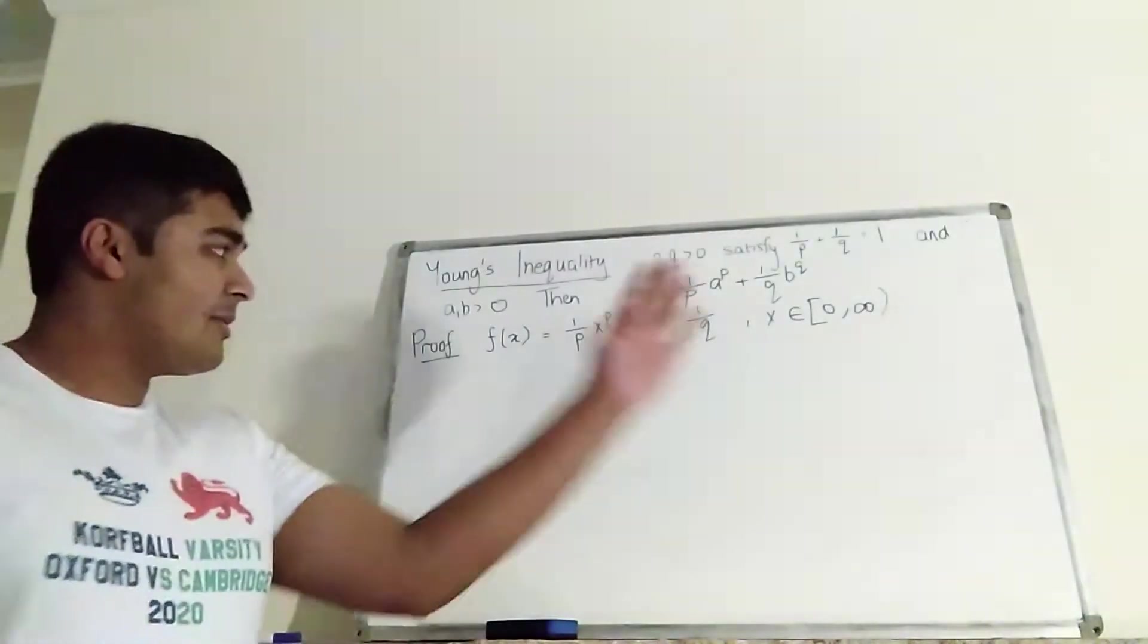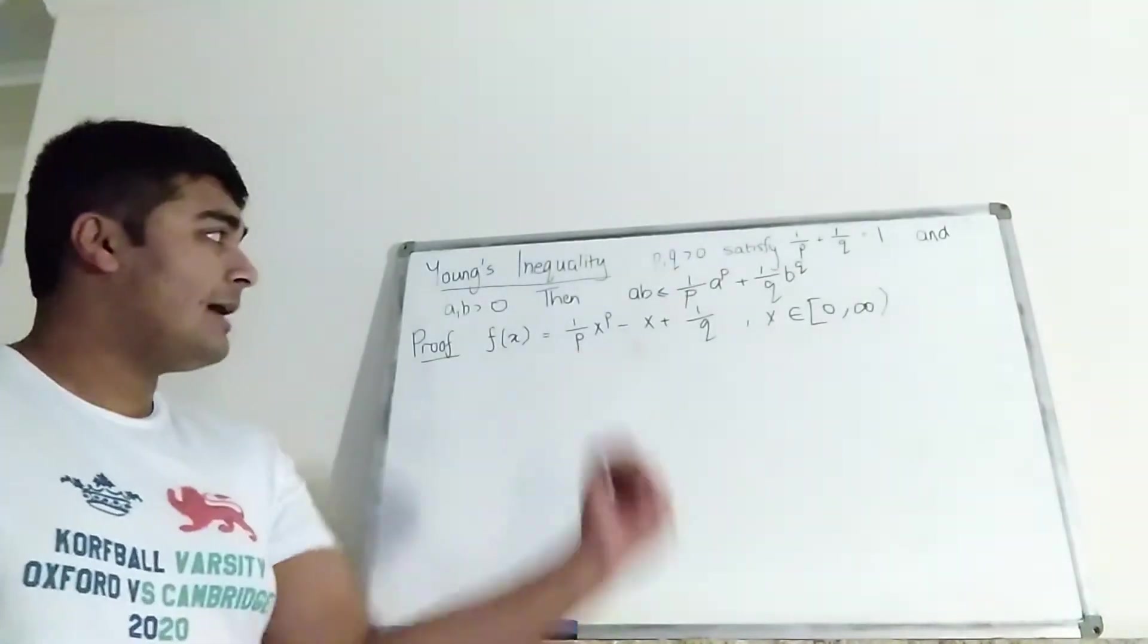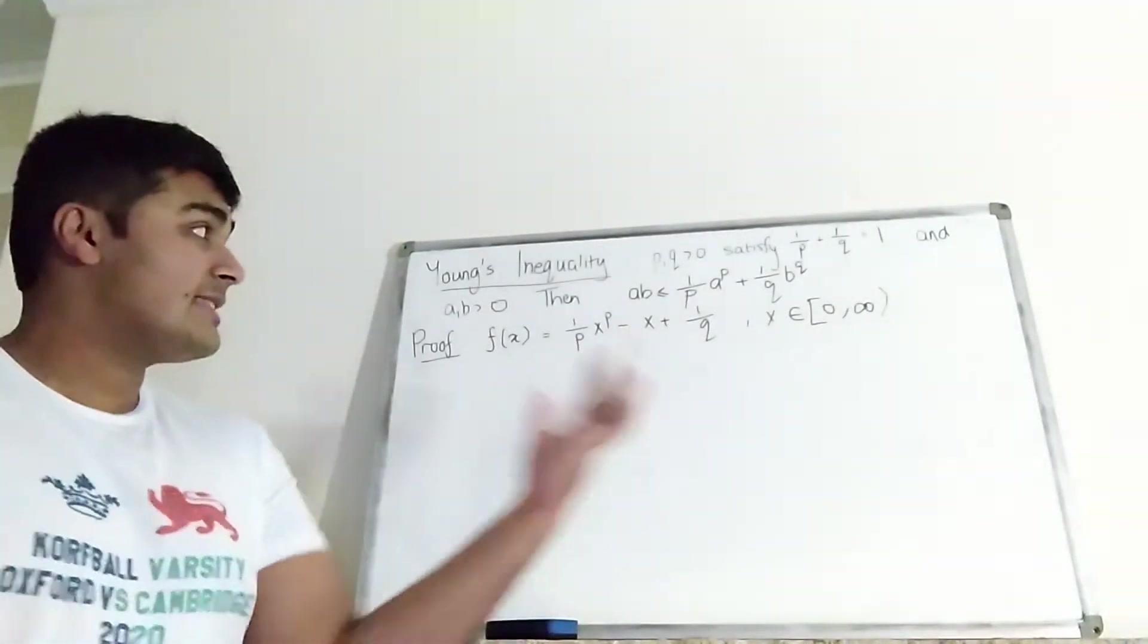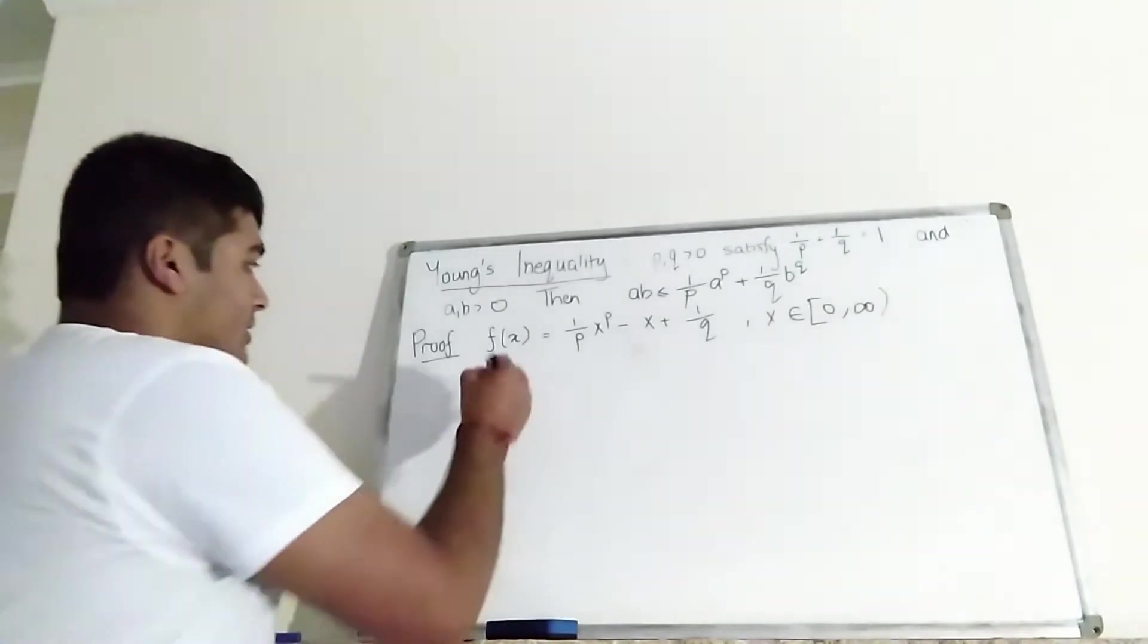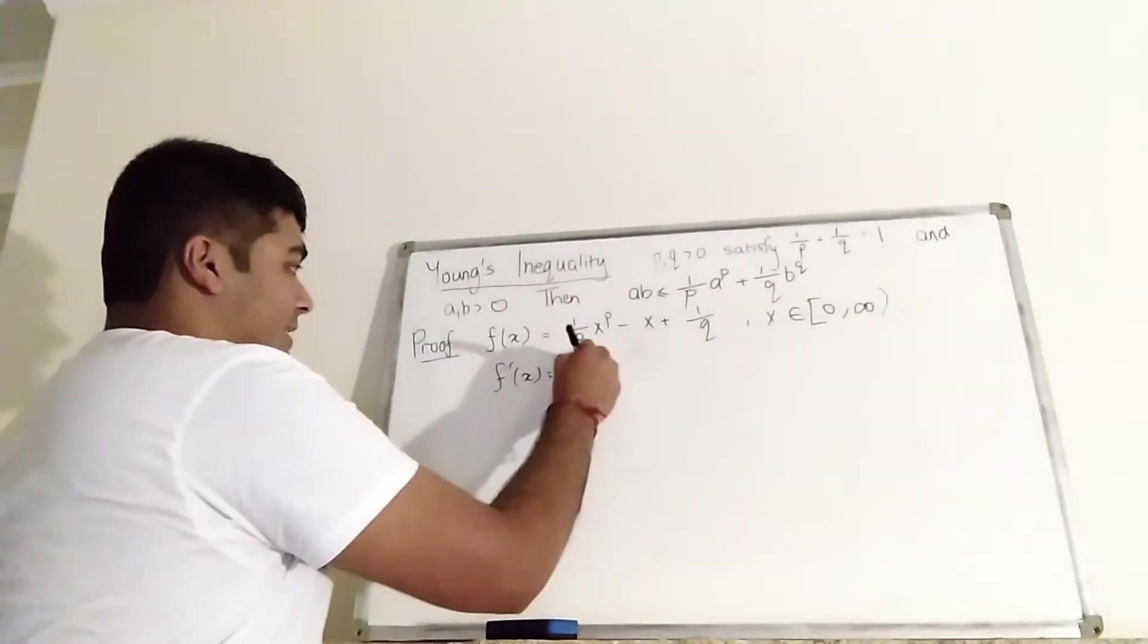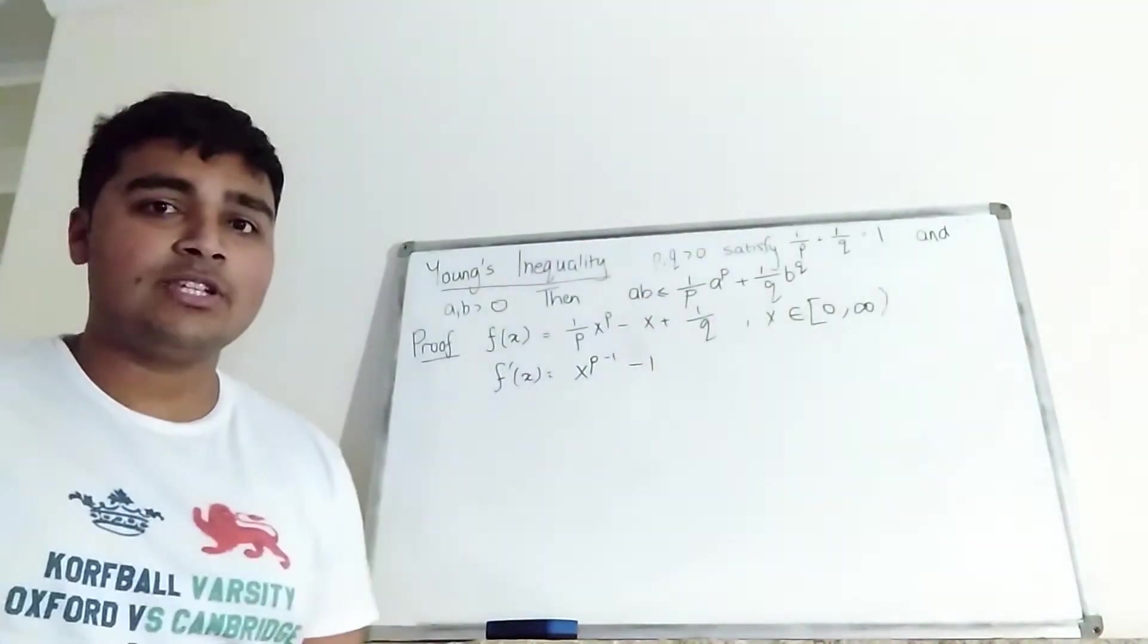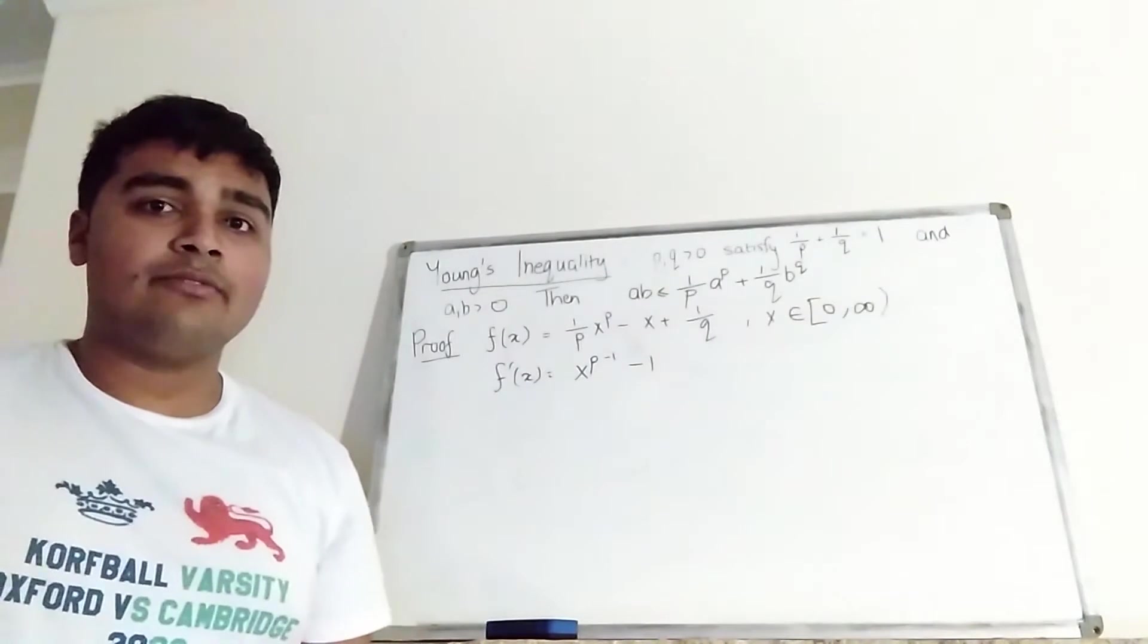Okay, so here's a proof. Remember, we have this function here, f of x equals 1 over P times x to the P minus x plus 1 over Q. The first thing I'm going to do is differentiate it. So I get f prime of x is equal to this thing differentiated gives me x to the P minus 1 and minus 1. And of course, the constant term vanishes. And this is for non-negative real x.